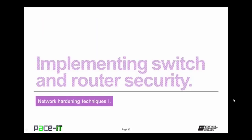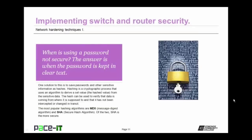Let's conclude with talking about implementing switch and router security. When is using a password not secure? The answer is when the password is kept in clear text. One solution is to save passwords and other sensitive information as hashes. Hashing is a cryptographic process that uses an algorithm to derive a set value — the hashed value — from the sensitive data. The hash can be used to verify that data is coming from where it is supposed to and that it has not been intercepted or changed in transit. The most popular hashing algorithms are MD5 and SHA. Of the two, SHA is the more secure, and the wise network administrator ensures all passwords and usernames are kept as hashed values.